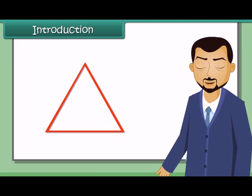Now a question arises whether four measurements would be sufficient to draw a unique four-sided closed figure, namely a quadrilateral. As a quadrilateral has eight parts, we need to know at least five parts to draw a quadrilateral.